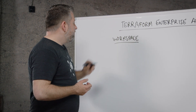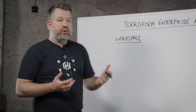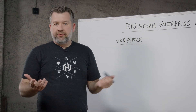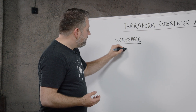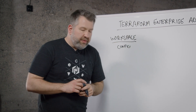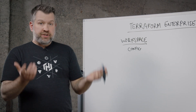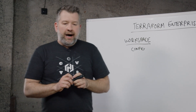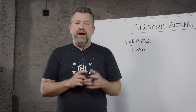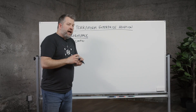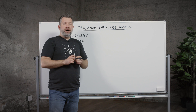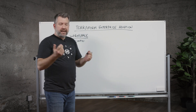The first thing we need to do when we create a workspace is to associate it with some set of Terraform configuration. Now that configuration could live in version control — we have built-in integrations with things like GitHub, GitLab, and Bitbucket right out of the box. But you can also upload configuration manually using the APIs or the CLI.